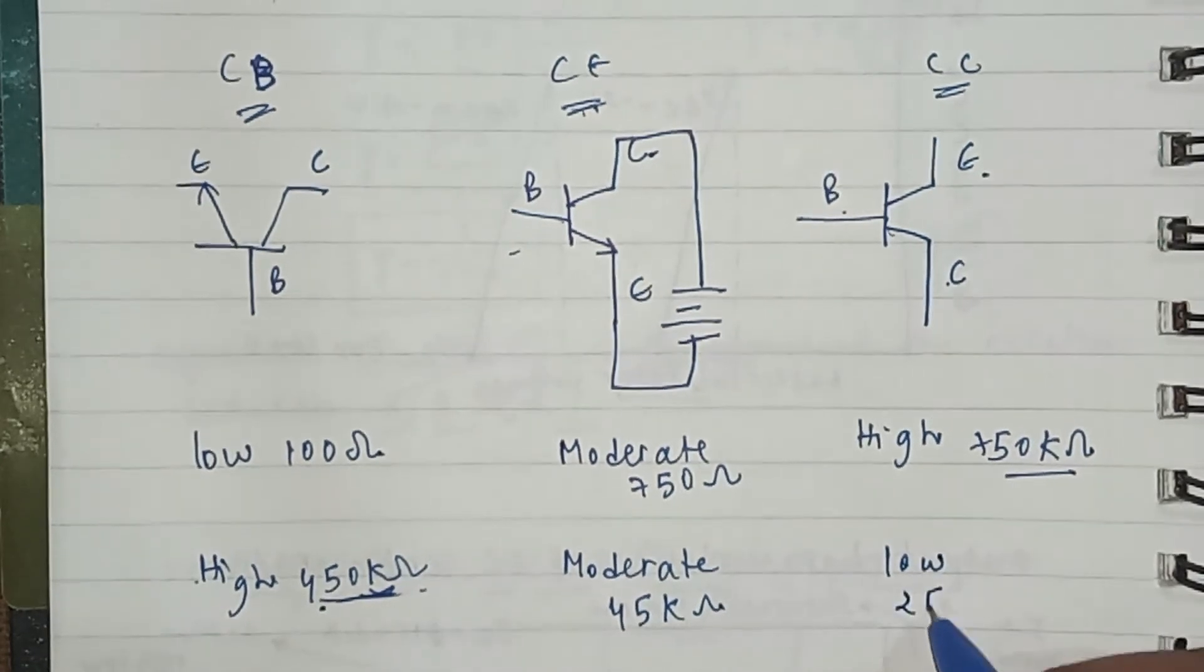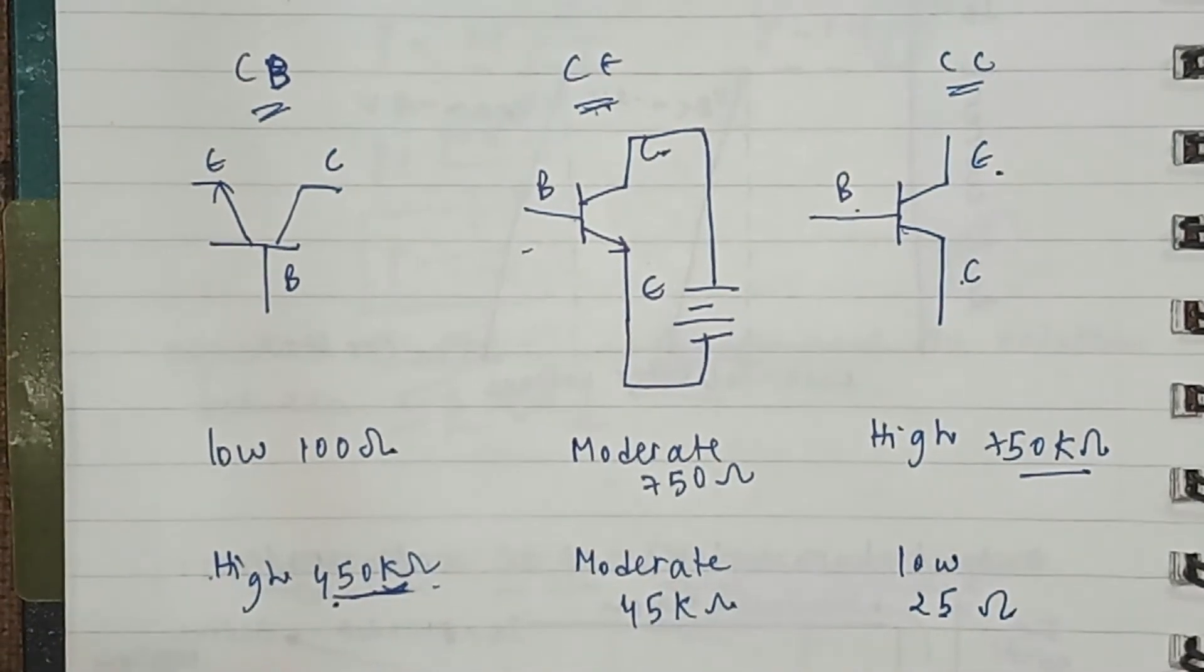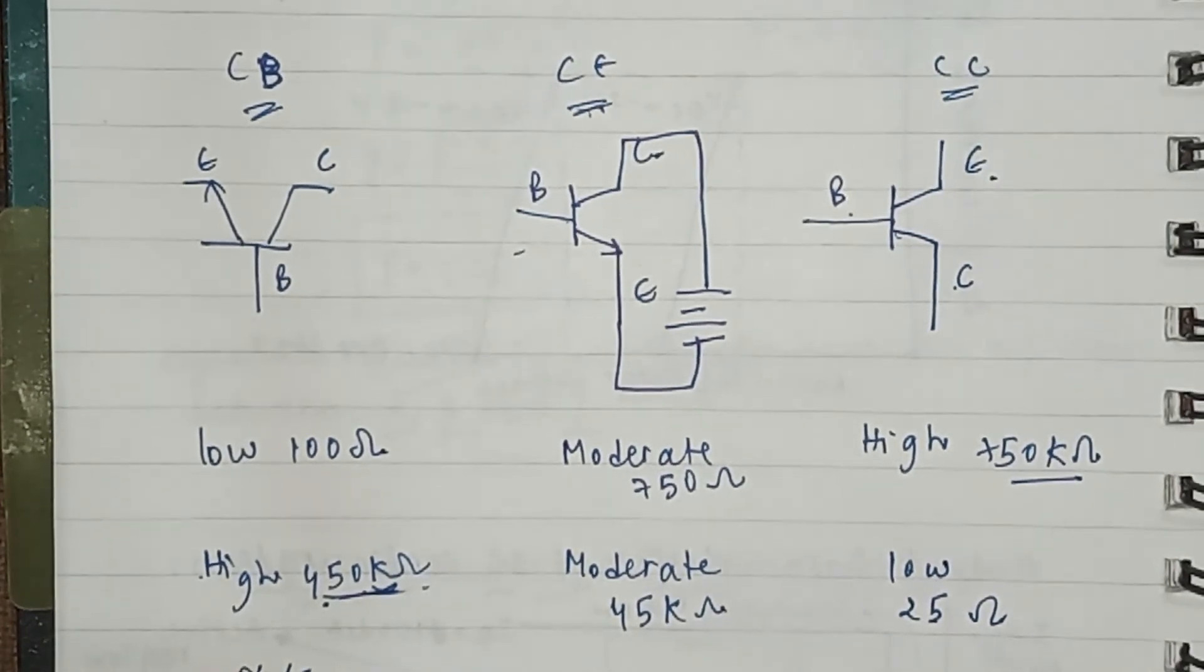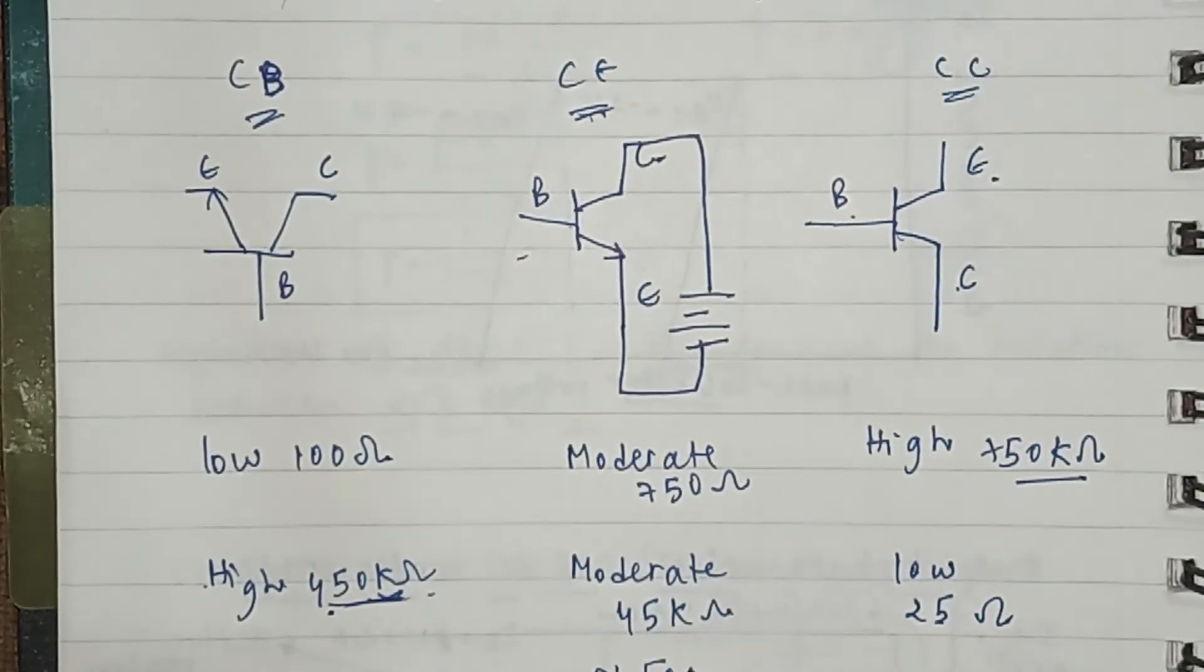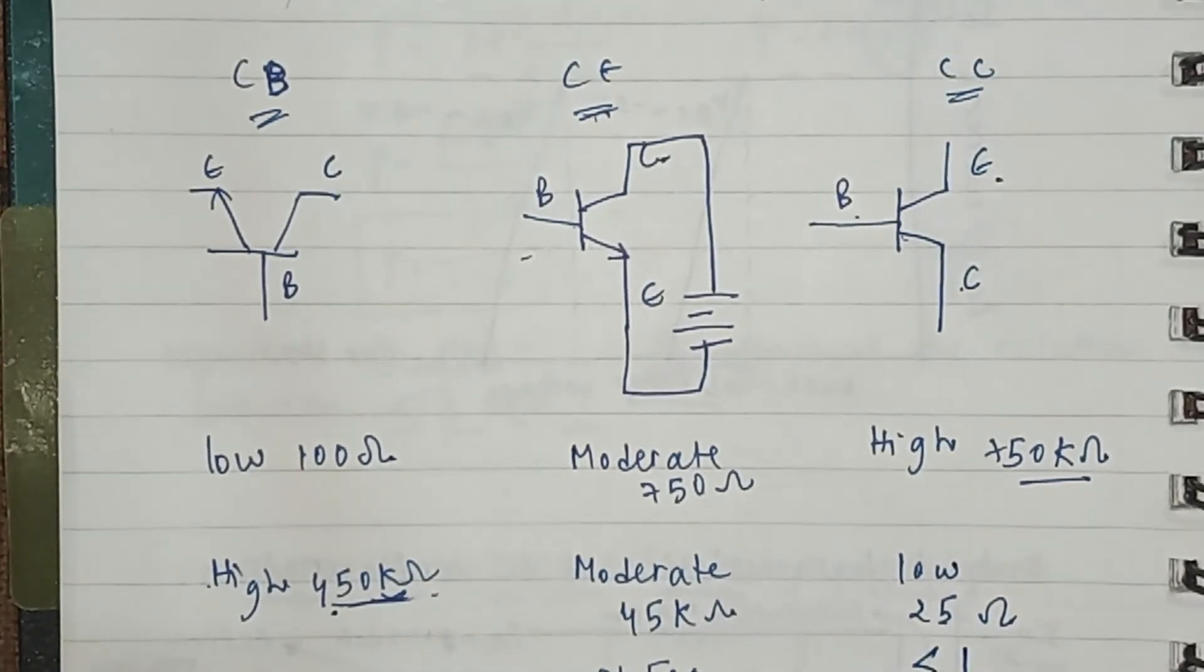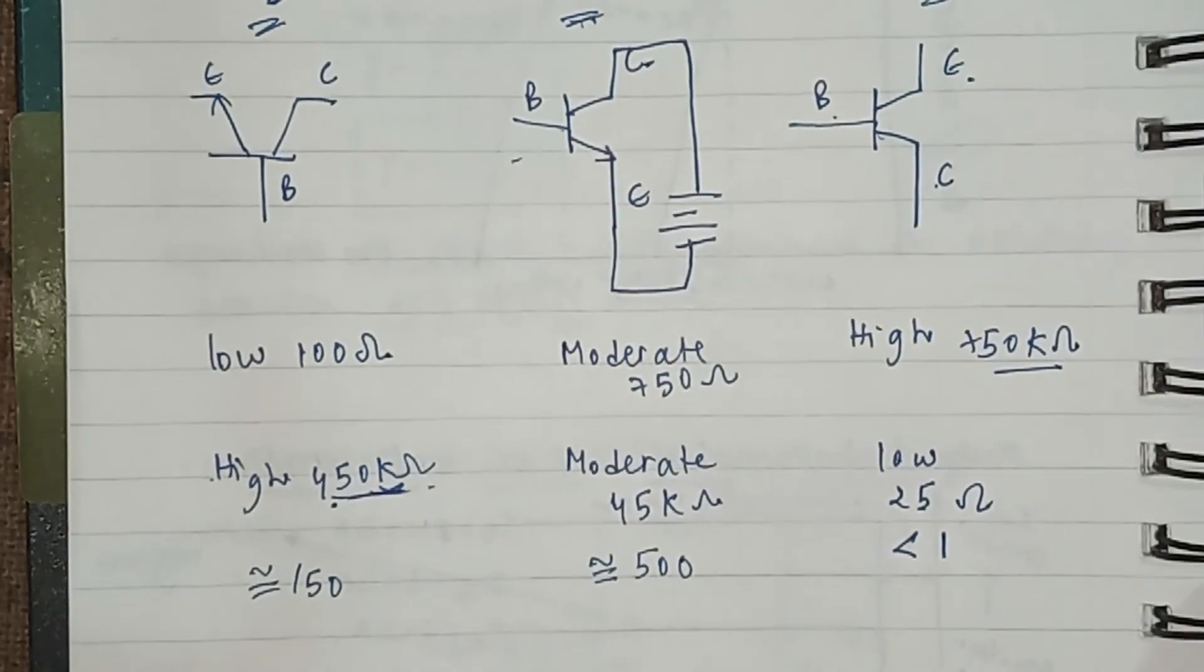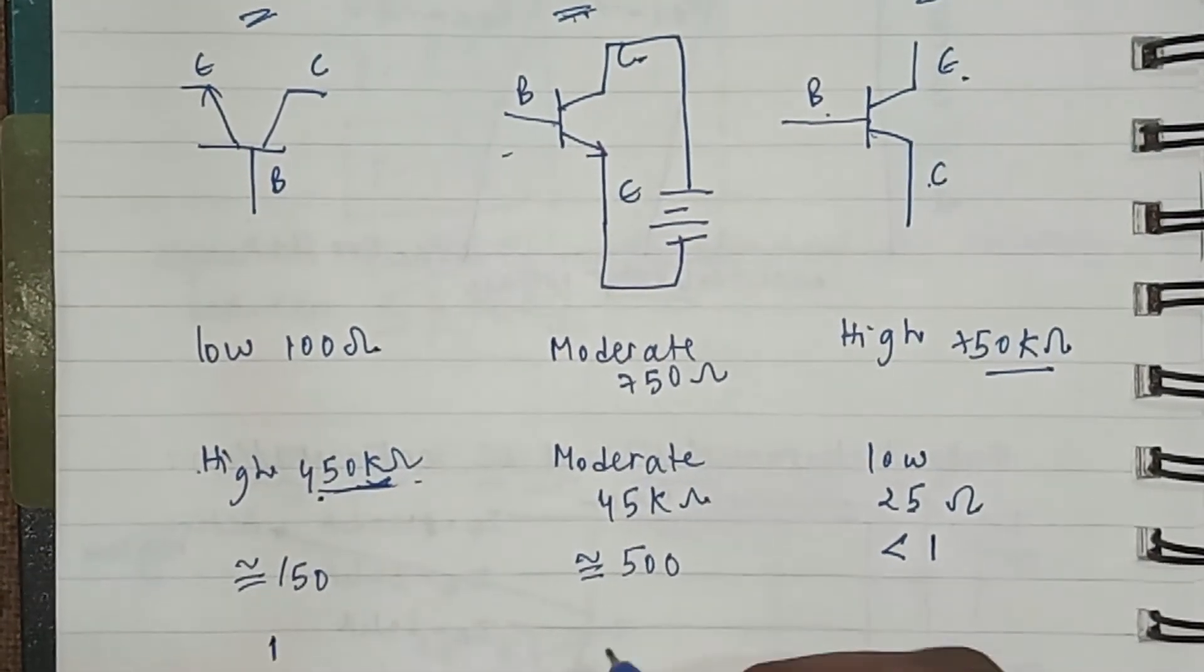When talking about the voltage gain, CB has voltage gain approximately 150, and CE has 500, and the CC has voltage gain less than 1. Then the current gain: CB has the current gain value 1, and both CE and CC configurations have high current gain.